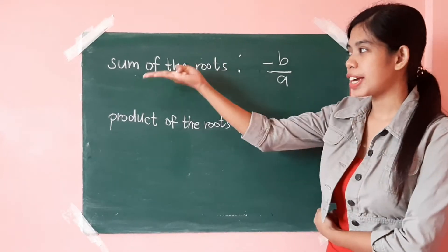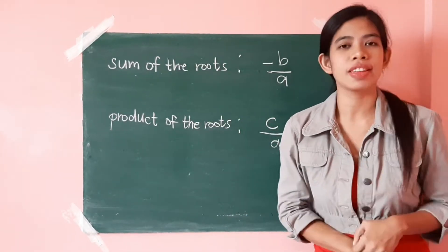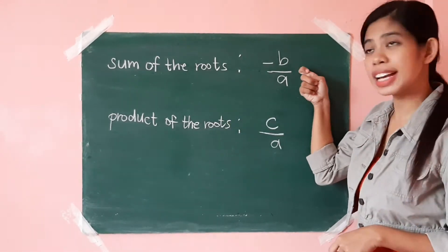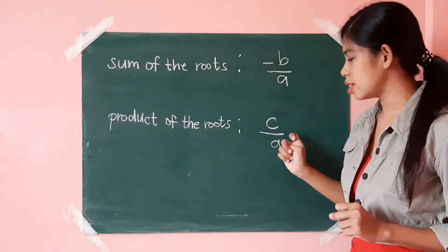So, once again, we can find out the sum and product of the roots of the quadratic equation by just using this formula. So, for the sum of the roots, it's just negative b over a, and for the product of the roots, it's just c over a.